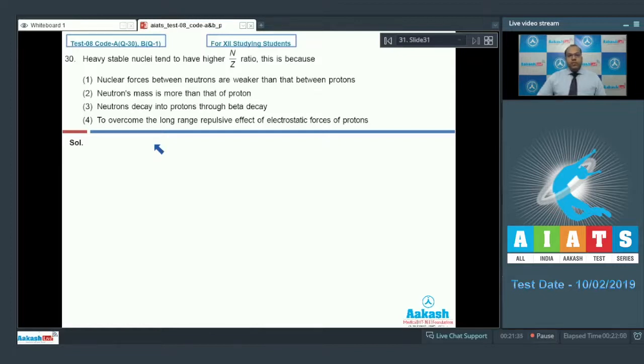So in order to make the nuclei stable, so higher number of neutrons are required to overcome the electrostatic repulsion of protons. So higher number of neutrons are required due to which the nuclear force is able to overcome the repulsive effect of electrostatic force of protons. So option 4 is the correct answer.